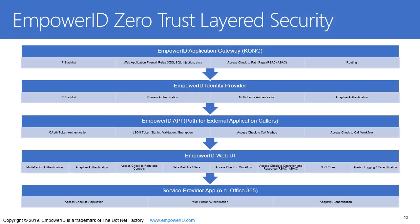As an example of different layers of the Zero Trust model, an end user request coming in from outside to access a web application such as EmpowerID, or to SSO into something like Office 365, goes through many layers where the user is never really interacting directly with the target system. You have IP blacklisting at multiple levels, real-time access and authorization checking at multiple levels, and adaptive multi-factor authentication at multiple levels — many layers of access checks before a user has access to a system.